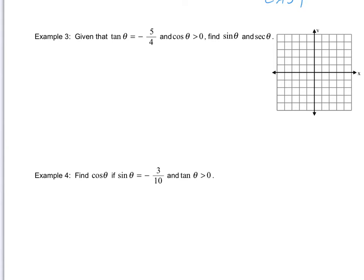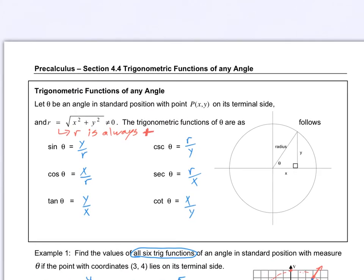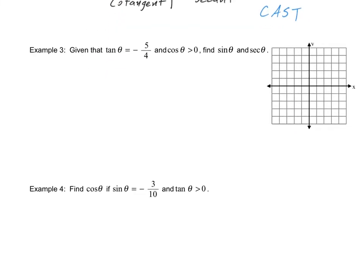Let's get a little tougher. Given that tangent of angle theta equals negative five-fourths — before I go further, tangent equals opposite over adjacent, or in our diagram, y over x. So if we are told that tangent is negative five-fourths, then that's supposed to equal y over x. One of those numbers must be negative. Five must be y, and four must be x — but we're not sure which one is negative.